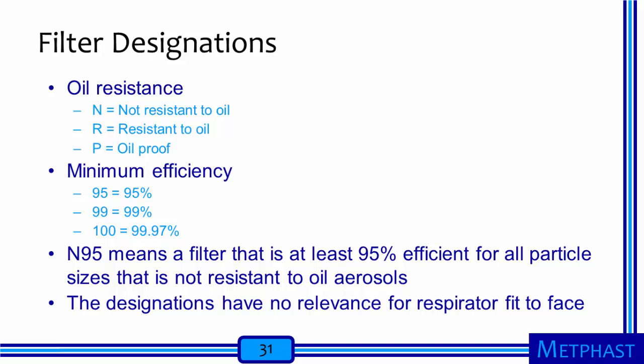Respirator filters are designated according to both their oil resistance and their minimum efficiency. For oil resistance: N means not resistant to oil, R means resistant to oil for at least an 8-hour workday, and P means oil proof. The minimum efficiency designations are 95 for at least 95% efficiency, 99 for at least 99% efficiency, and 100 for at least 99.97% efficiency for all particle sizes. For example, N95 means a filter is at least 95% efficient for all particle sizes but is not resistant to oil aerosols. The designations have no relevance for the respirator fit to the face—they are only a designation of filter medium efficiency.